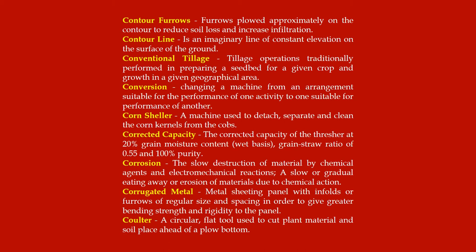Contour furrows: furrows plowed approximately on the contour to reduce soil loss and increase infiltration. Contour line: an imaginary line of constant elevation on the surface of the ground. Conventional tillage: tillage operations traditionally performed in preparing a seed bed for a given crop and grown in a given geographical area.